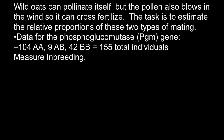Here is a problem. Wild oats can pollinate itself, but the pollen also blows in the wind, so it can cross-fertilize. The task is to estimate the relative proportions of these two types of mating. Here is data for the phosphoglucomutase or PGM gene. We have 104 individuals that belong to the AA genotype, 9 individuals that belong to the AB genotype, and 42 individuals that belong to the BB genotype. The total number of individuals would be 155.